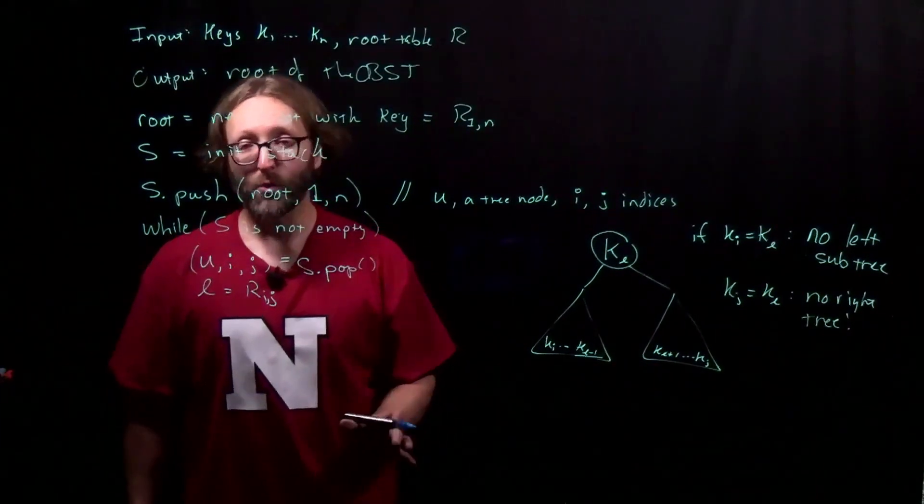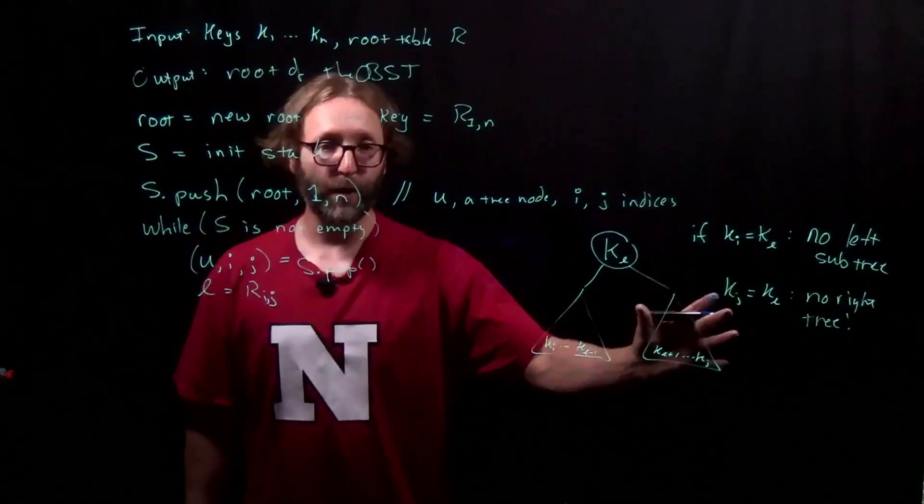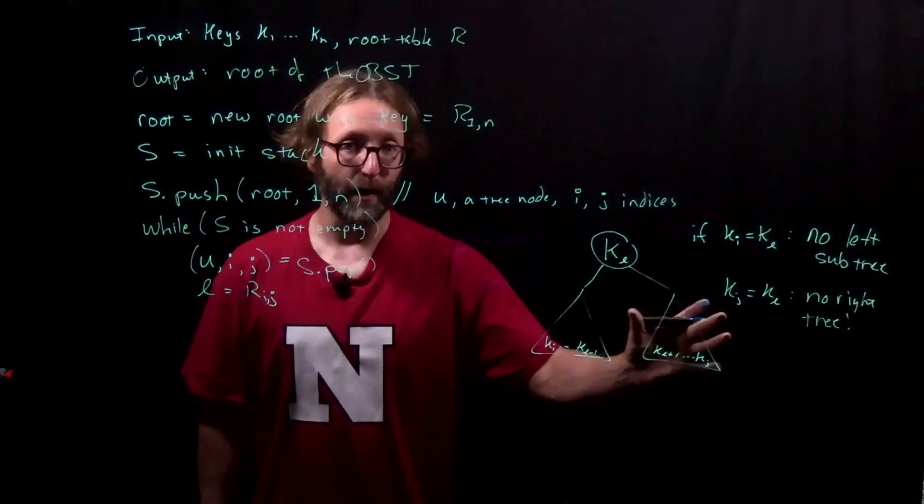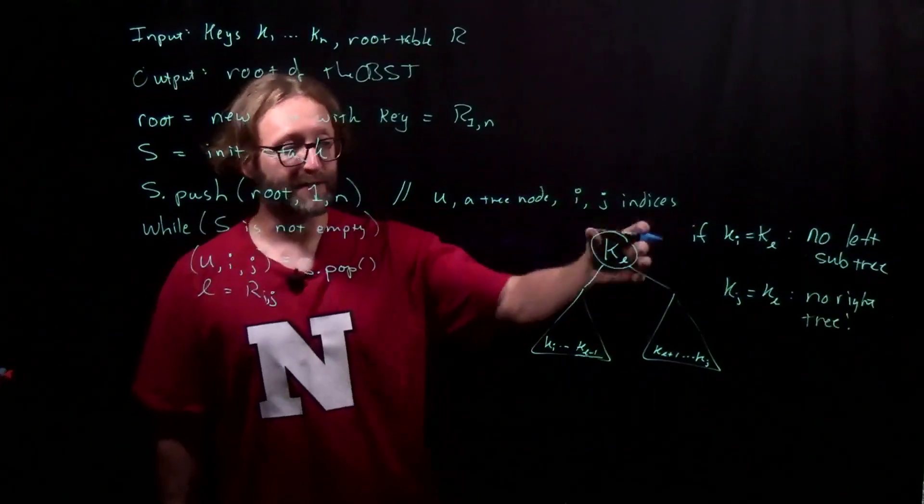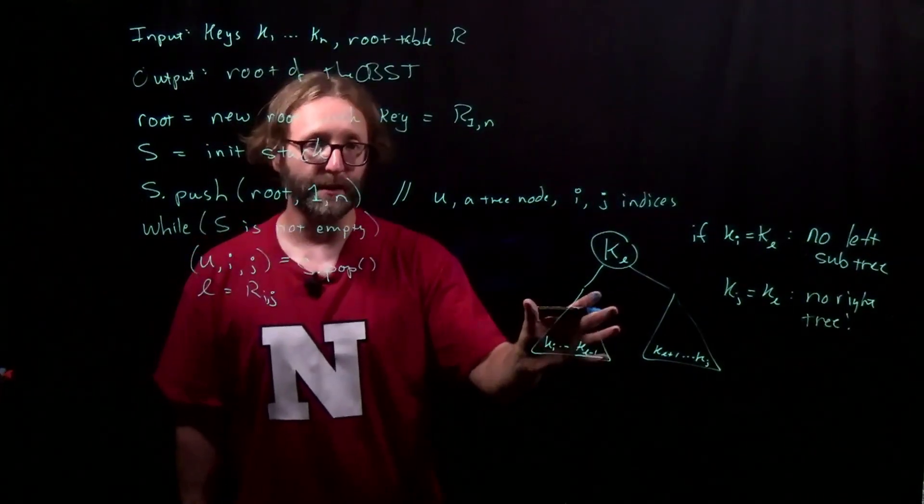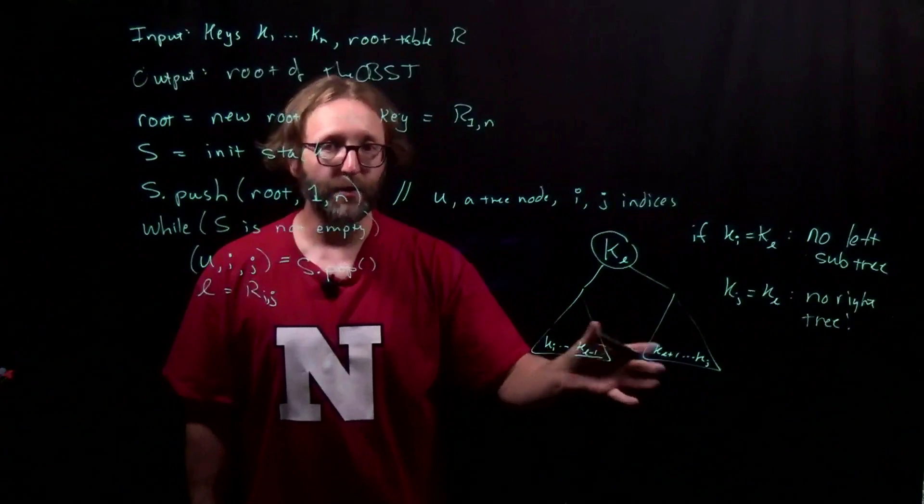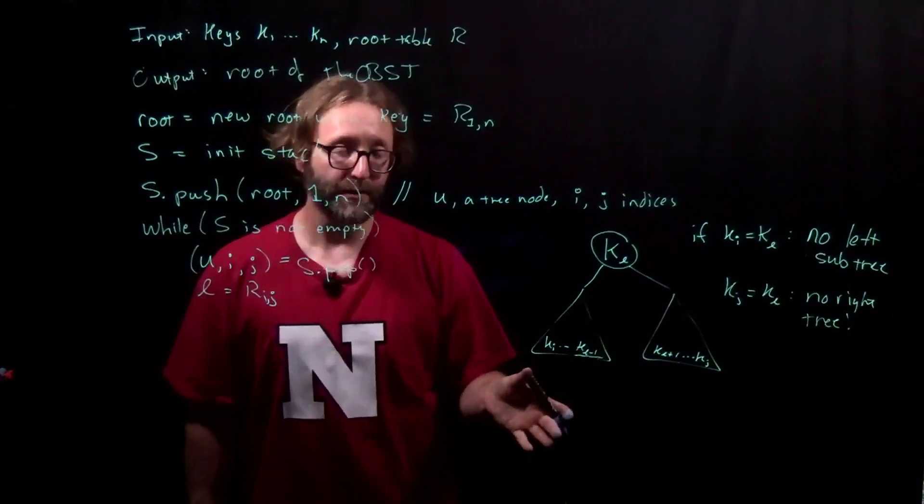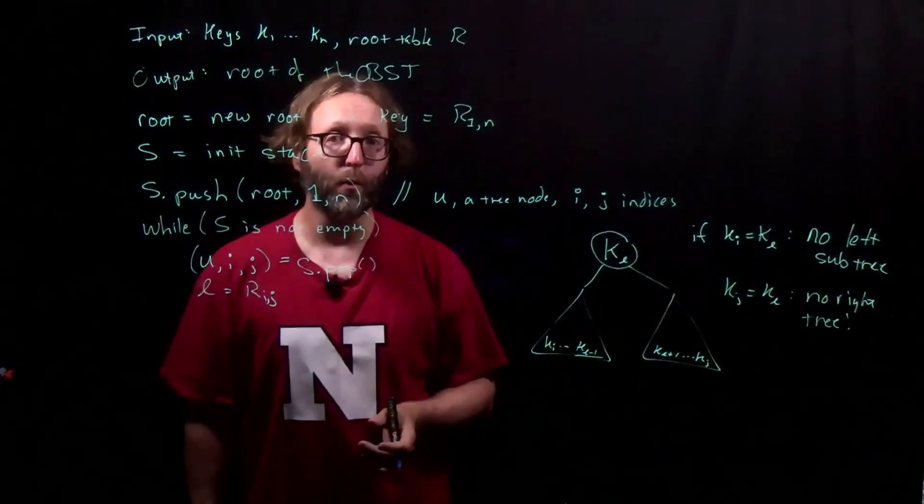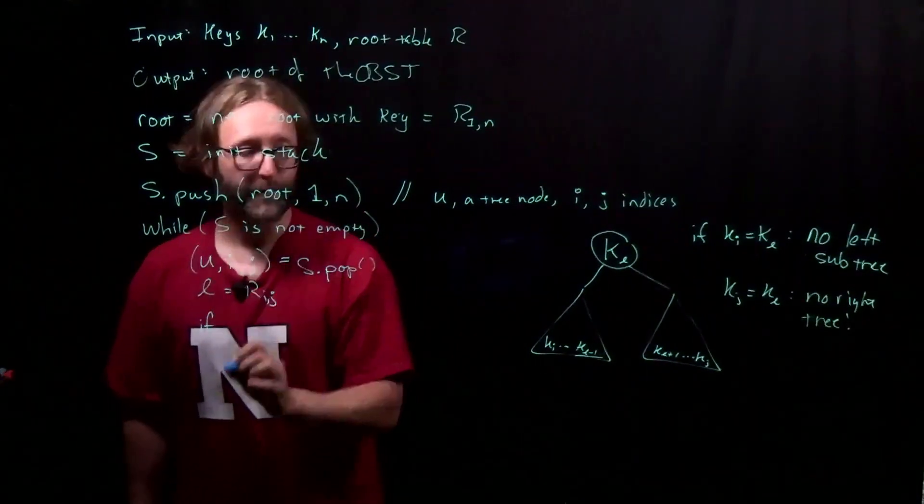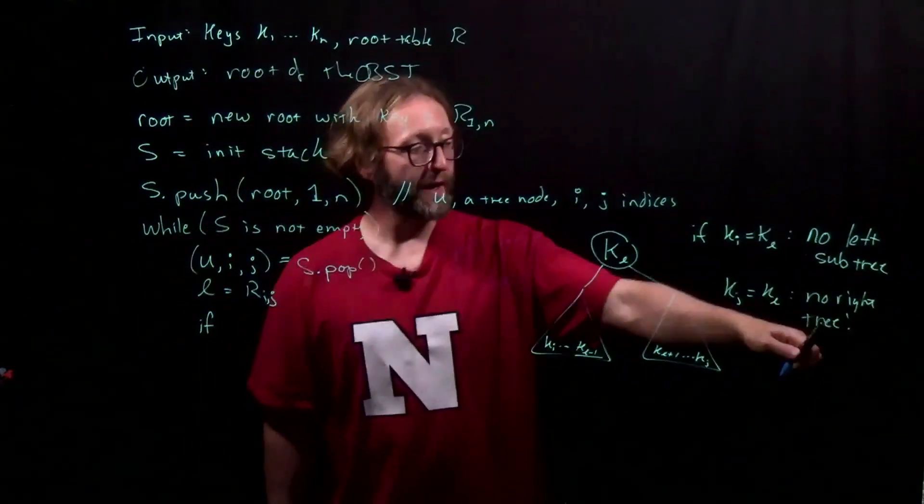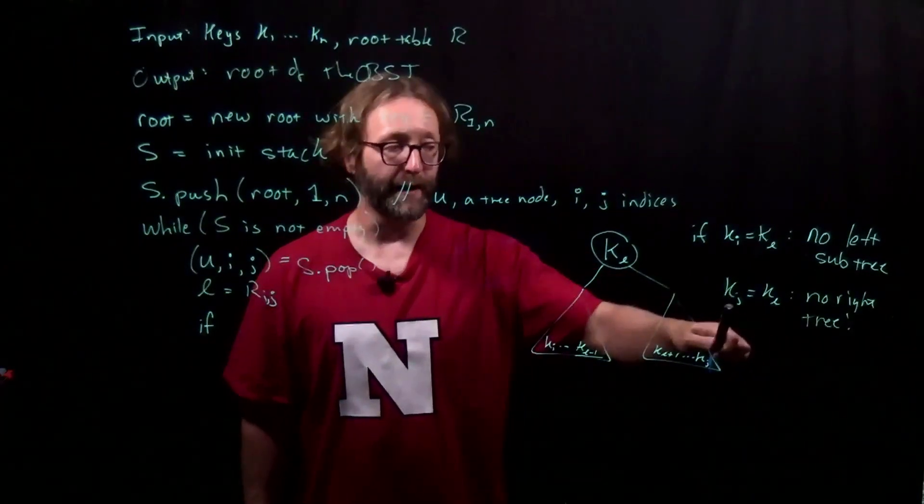So that this looks more like a post-order traversal, I'll go ahead and push whether or not we need to take care of the right subtree, and then the left subtree, so that when the next thing is popped off the stack, we'll take care of building the right subtree first. The order generally doesn't matter, but when you simulate this algorithm, it'll look most like a pre-order traversal. We want to build the right subtree when this is not the case.